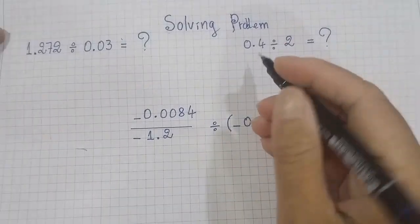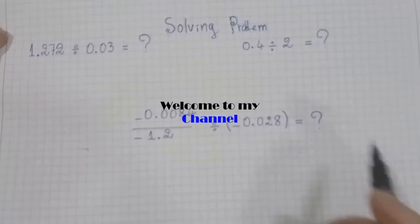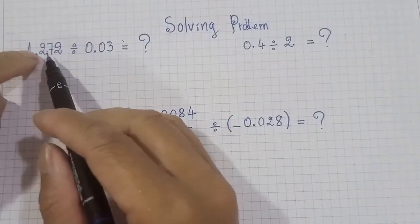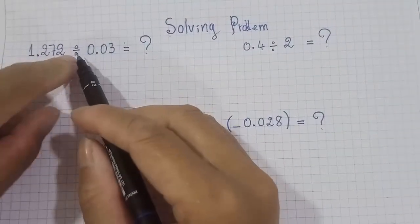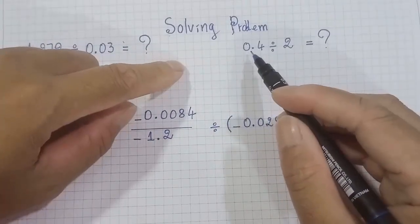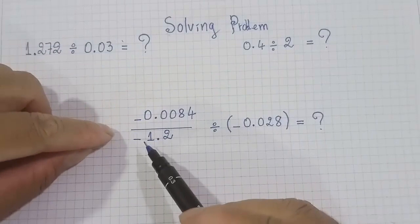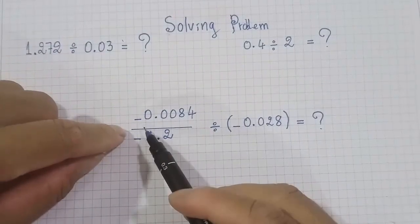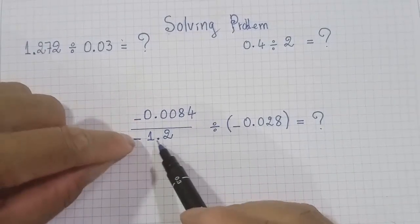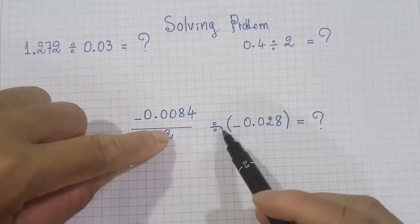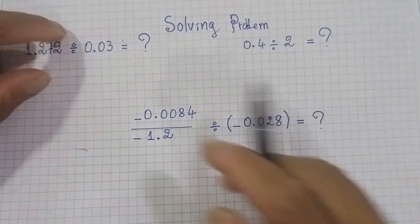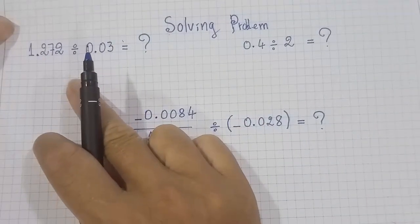Hello everyone. Today we show you about this program — okay, three topics. Topic one: 1.272 divided by 0.03. The second topic is 0.4 divided by 2. And the last problem is minus 0.0084 divided by minus 1.2, divided by minus 0.028. Okay, let's start from here.